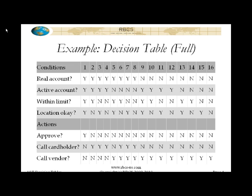This is an interesting form of decision table called a full decision table. The reason it's called a full decision table is because every possible combination of conditions is shown. How do you know that is true? There are four conditions, so how many possible combinations of yes/no are there if there are four variables that can be yes or no? It's two times two times two times two — two to the fourth power — which is 16. And you'll notice that there are 16 columns. To be a full decision table, it must have exactly the right number of columns based on the conditions.